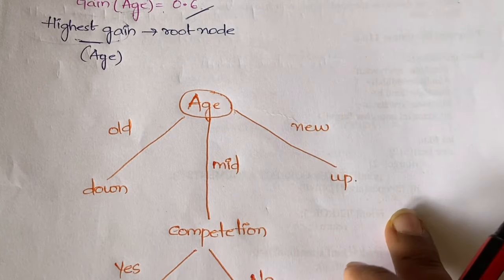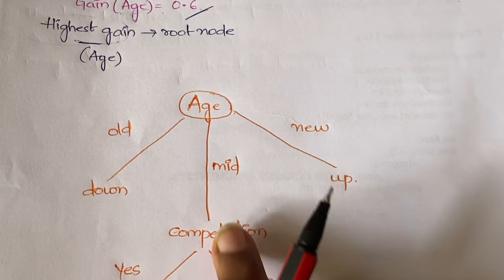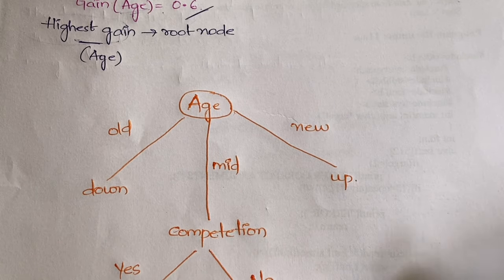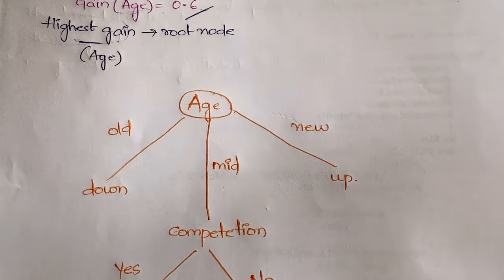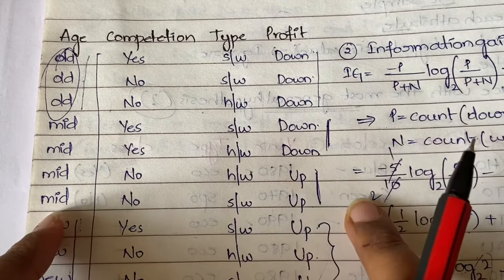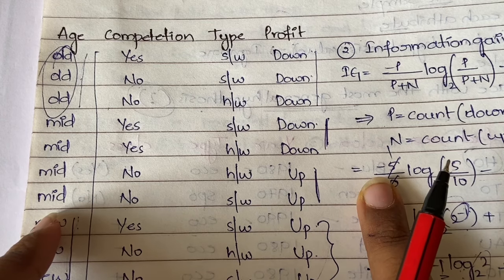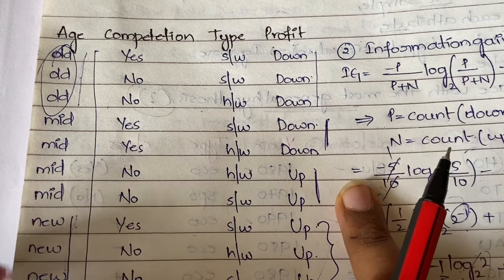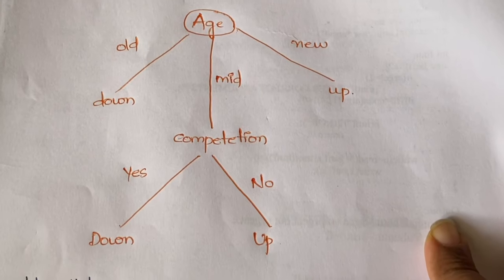All old will come under down, and all new will come under up based on our previous example. But the value mid is not having unique values. If you can see the example we took, mid has two down values and two up values—no unique values. So here, you need to take another node to classify this.